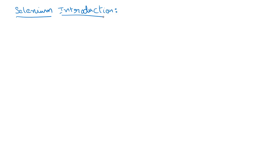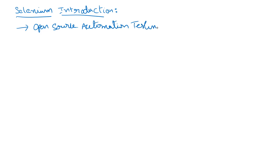What is Selenium? Selenium is an open source automation testing tool. That means to start with Selenium scripting you don't need to buy any software — it's an open source automation framework.